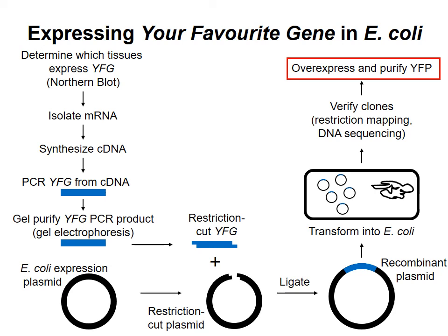At this point, I've described how to create a plasmid containing a gene of interest, transform the plasmid into E. coli, and verify that the cloned plasmid is actually the one you want. Now I want to talk about how you over-express and purify your favorite protein.